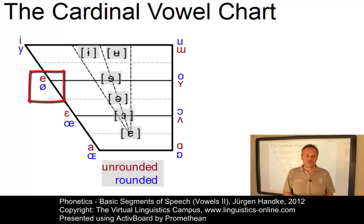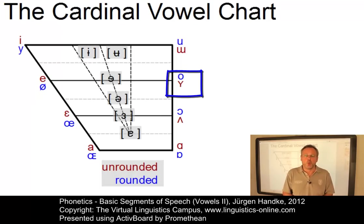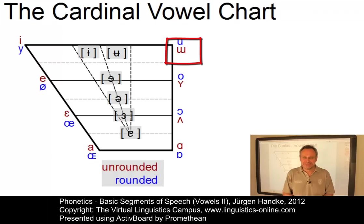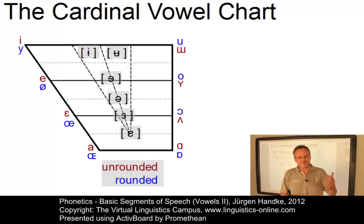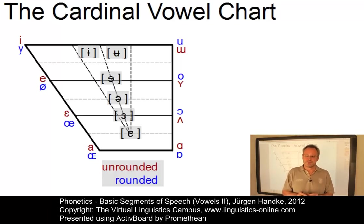E is an unrounded mid-high front vowel. O is a rounded mid-high back vowel. U is an unrounded high back vowel. And R is a low central vowel. With these three parameters, we have defined a reference system that can be used to describe the vowels that are used in the languages of the world.